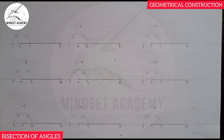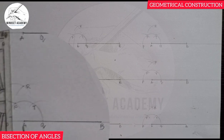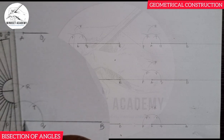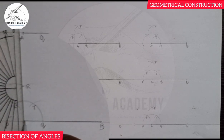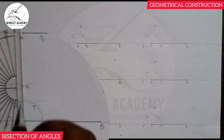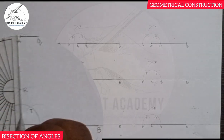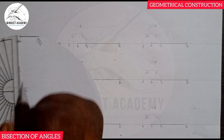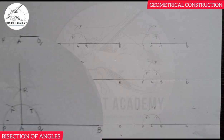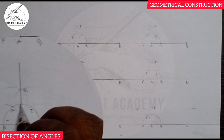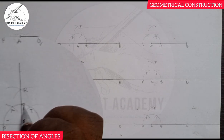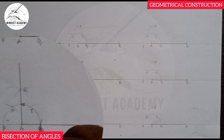Let's start with angle 90°. Once you follow the same process we used, if you draw a line from point A passing through point Arrow, that is 90°.